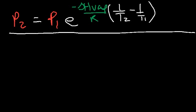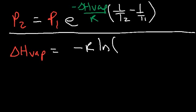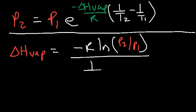If you need to calculate the heat of vaporization, use this form: the enthalpy of vaporization equals negative R times the natural log of P2 divided by P1, all divided by 1 over T2 minus 1 over T1.